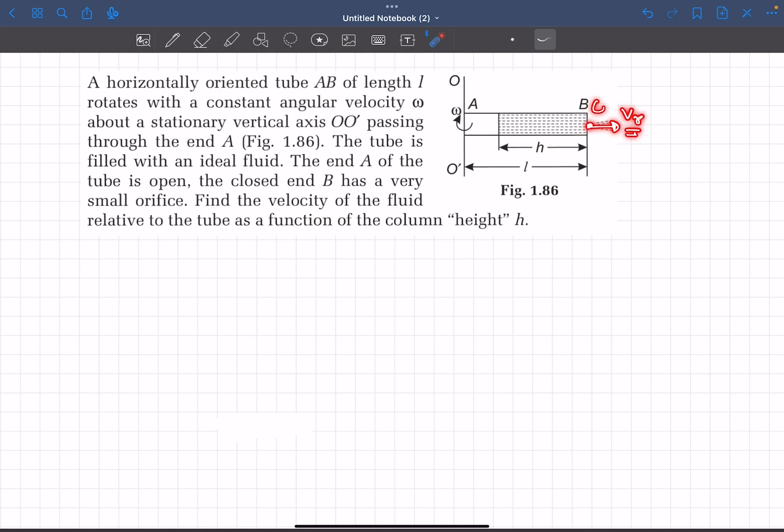Relative to the ground frame it will have a component of omega L into or out of the plane depending on omega, but we have to ignore that. We don't care about that. What they're asking us to find is V_r.